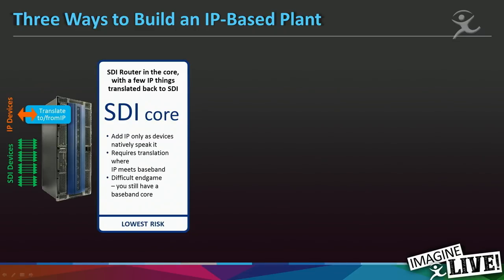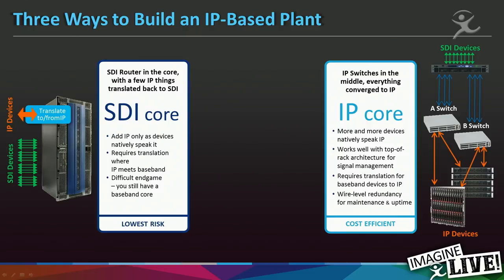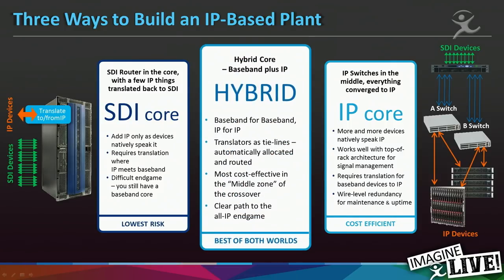There are fundamentally three ways to approach making an IP-based plant. One: you have an SDI router as the big core, mostly SDI, but you drop a few gateway cards in it and attach your IP devices. Two: you go straight to the end game — IP switches with SDI gateways for the legacy equipment. Three: an SDI core and an IP core with tie lines between them. We support all three models. It really depends on what percentage of your devices natively support IP, which require gateways, and how big it's all going to get. We have a toolkit to help you build the project you need.